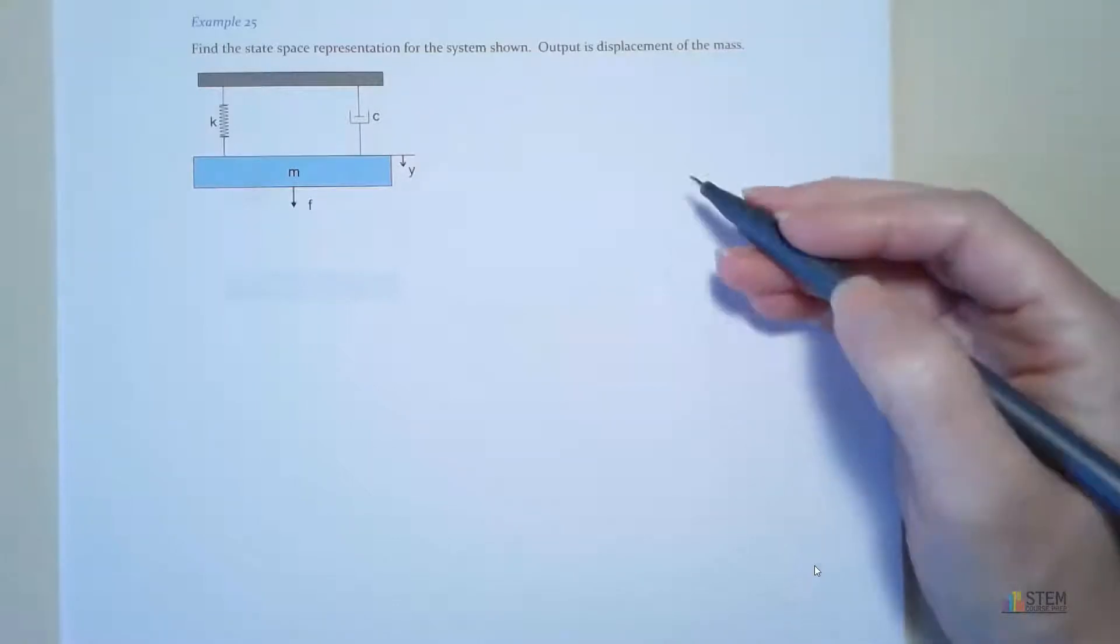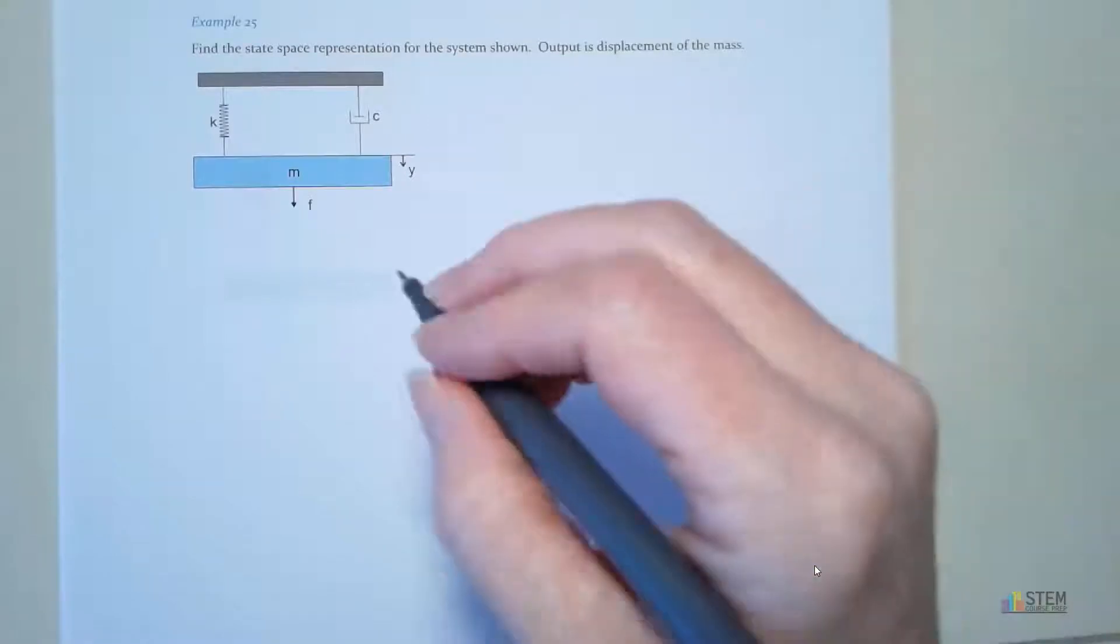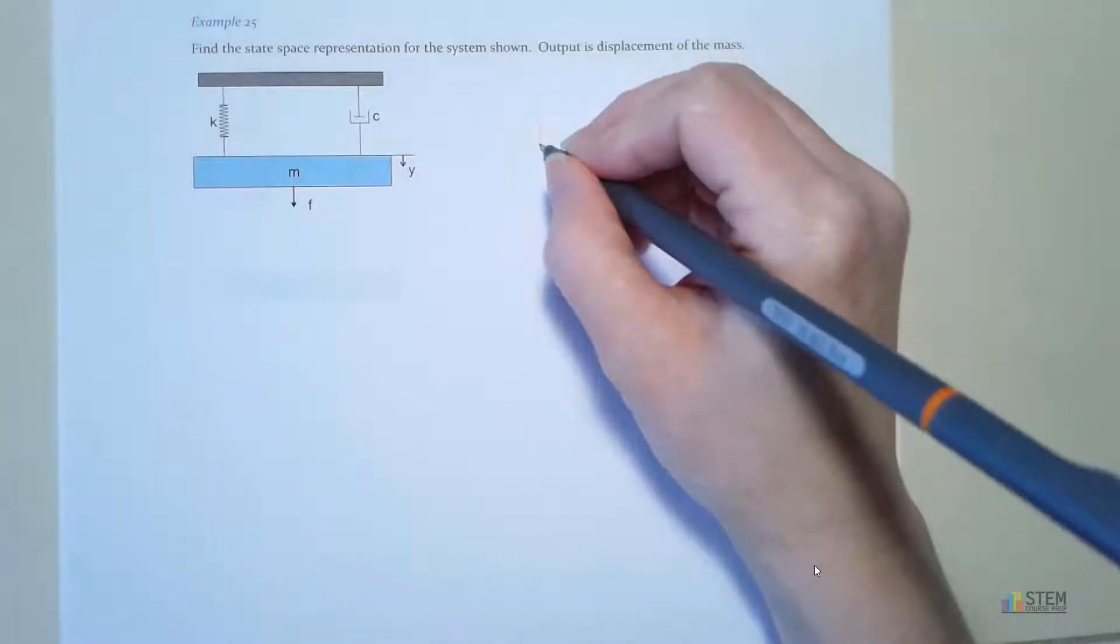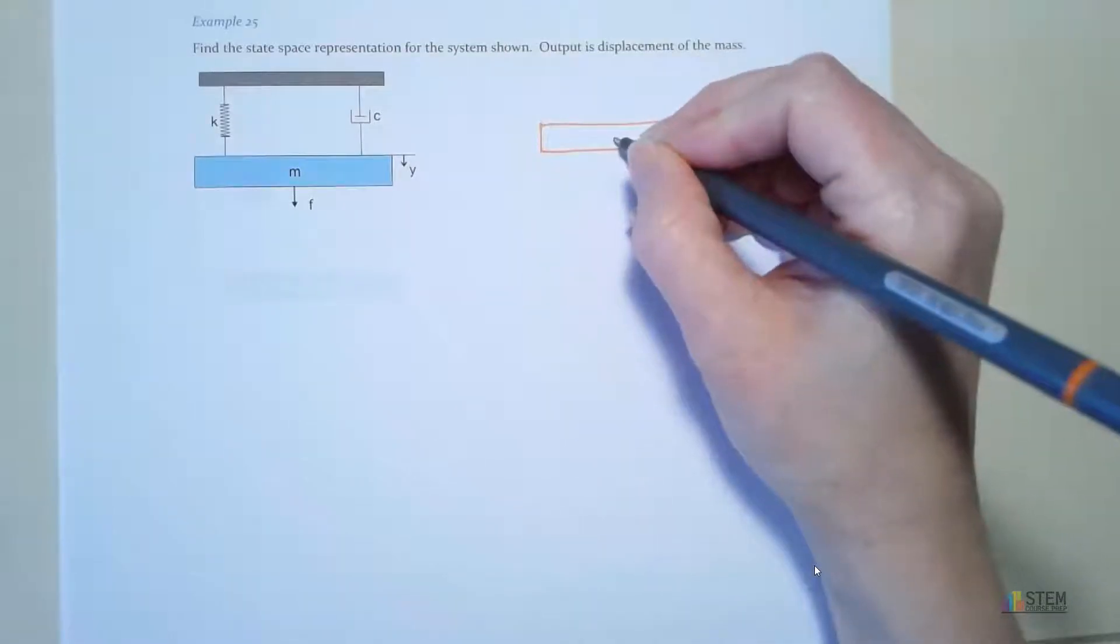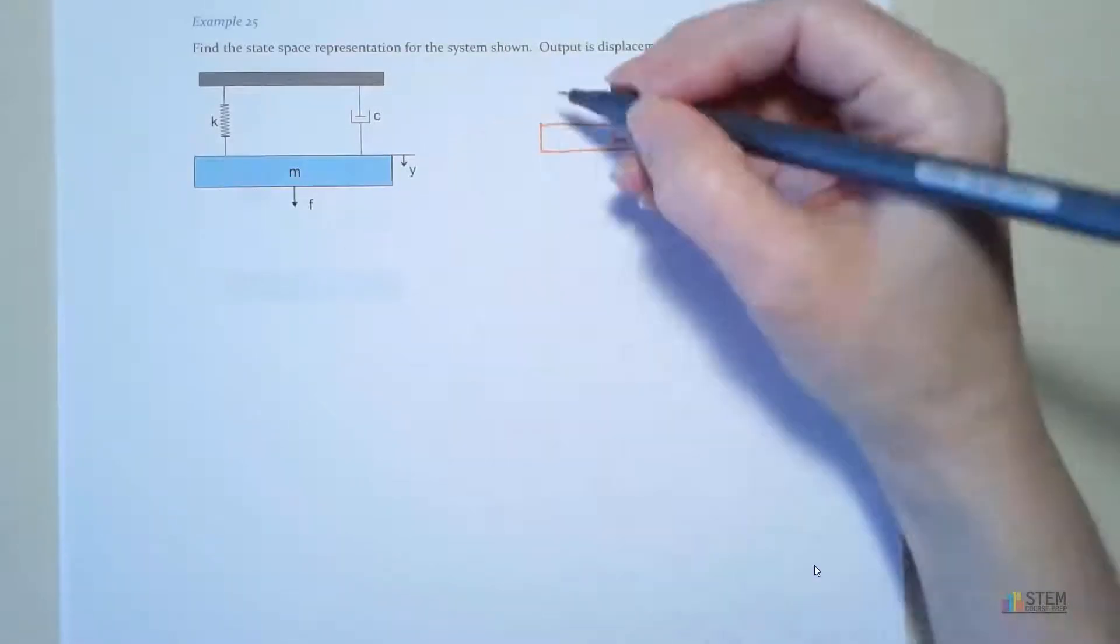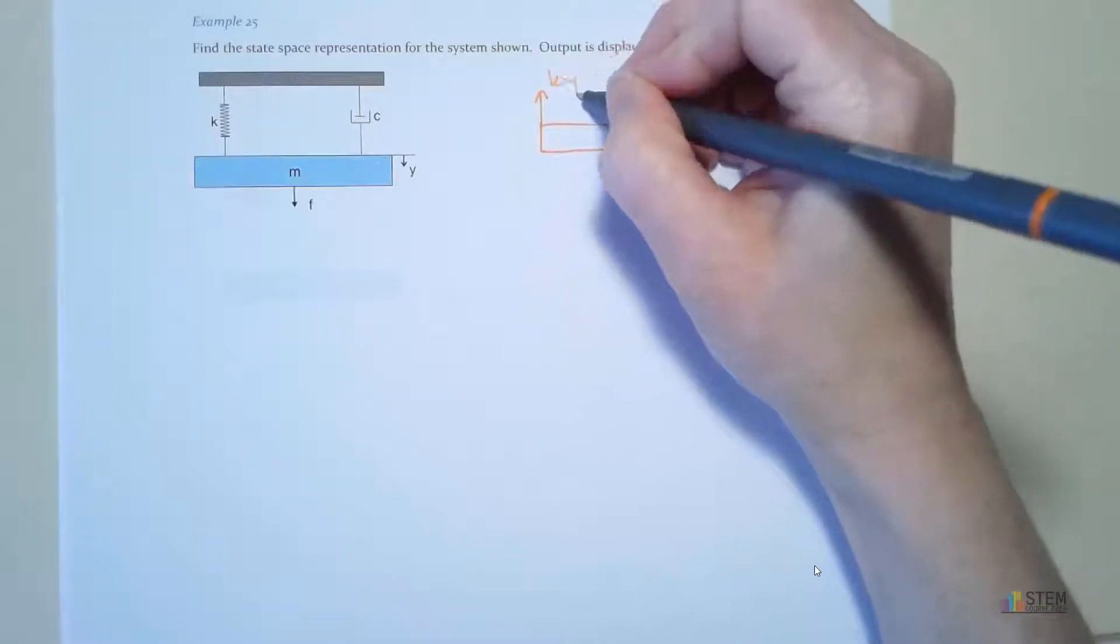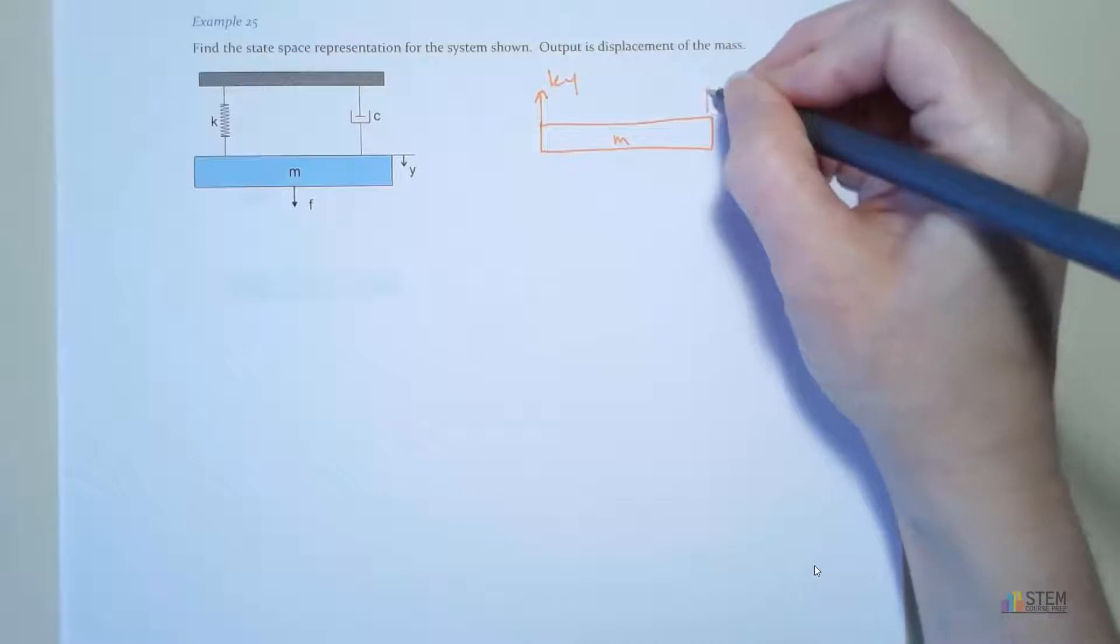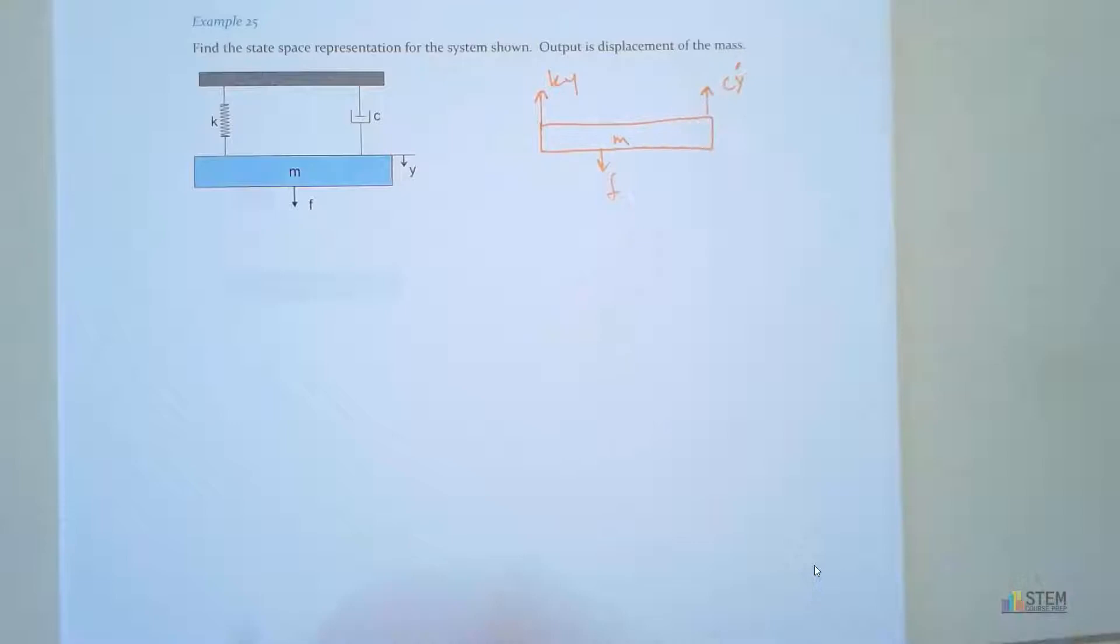First thing we need to do is figure out our equation of motion. If you go through here, I'm just going to do a quick free body diagram because there's not much going on in this problem. You'll have your mass, your spring with k times y, your damper which will be c times y dot, and then that applied force f.